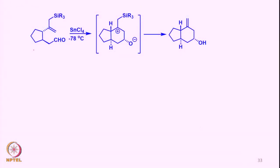We can also take another interesting example where the allylsilane is inbuilt in the molecule. After the aldehyde coordinates with tin tetrachloride, an oxocarbenium-type intermediate is formed, and then the allylsilane attacks via its gamma carbon — with gamma, beta, and alpha positions identified — in an intramolecular fashion through this carbocation intermediate. Let us see how this cyclization proceeds.